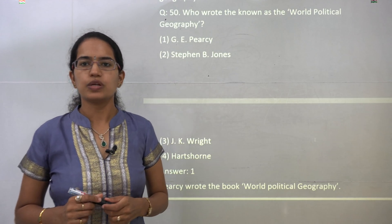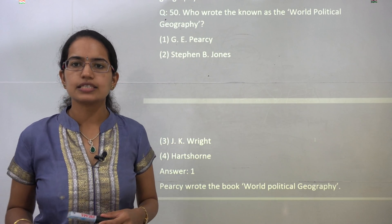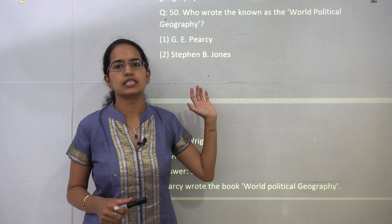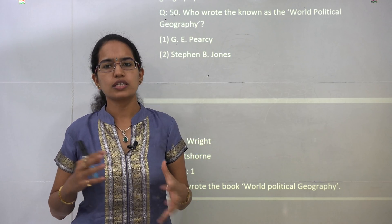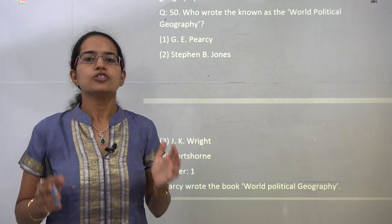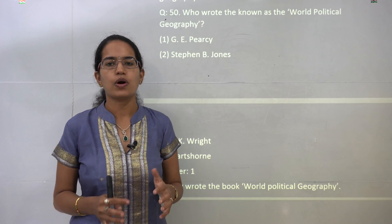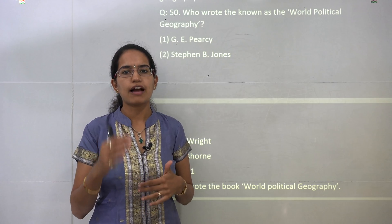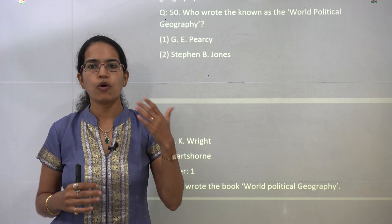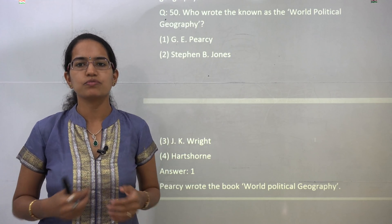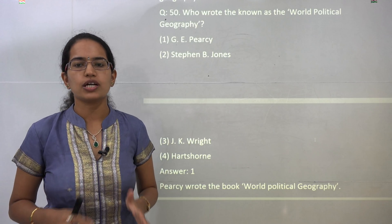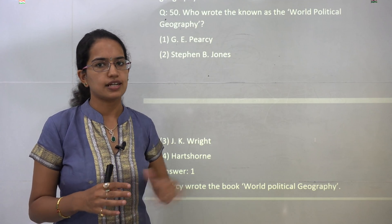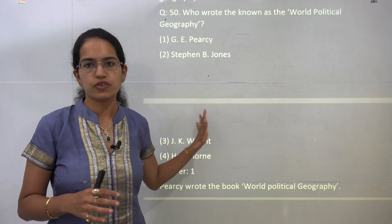With this we have covered 50 questions. We will be covering the last set of questions in the upcoming lectures. Most of the questions in this section were from geographical thought — the major books and major scholars — so human geography becomes very important. In the human geography book compilation, a detailed list of all books and authors is covered, which accounts for roughly 90 percent of the work if studied thoroughly.